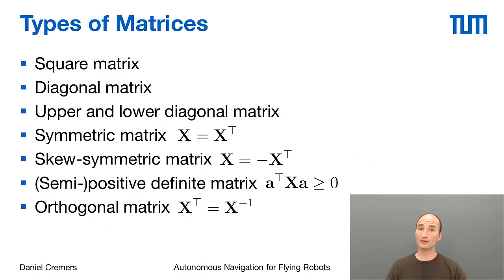For matrices, there are actually different types of matrices that we can distinguish. Square matrices are matrices where the number of rows and columns is equal, in contrast to the more general case of rectangular matrices. Then we have diagonal matrices. These are matrices where only the diagonal elements are non-zero. In addition, we have upper and lower diagonal matrices, which are matrices where the non-zero elements are all above or below the diagonal.